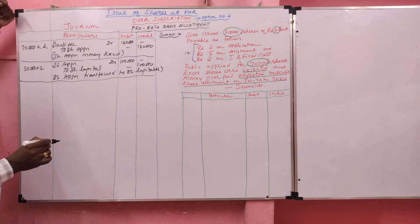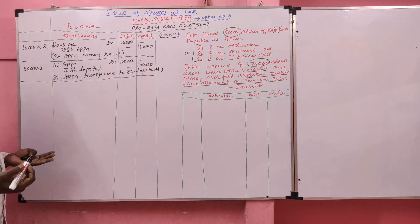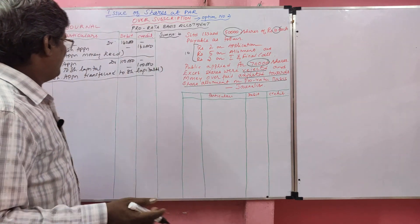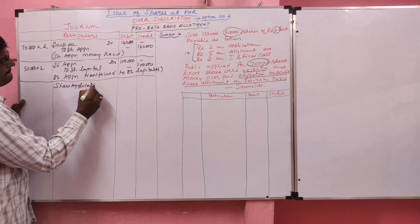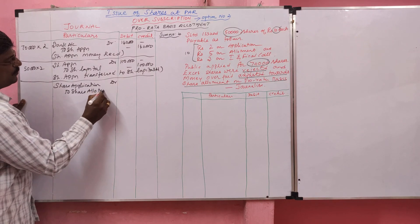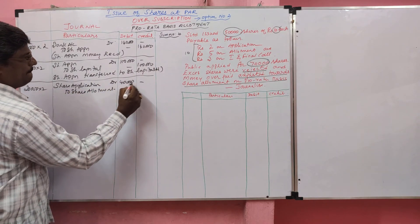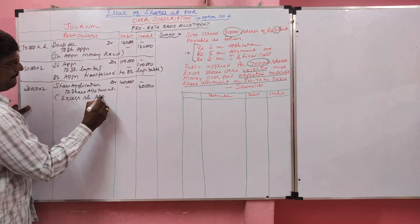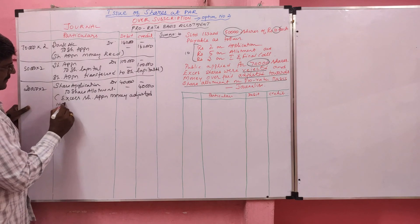So we received 70,000 share application money; we can transfer 50,000 share application money to the capital. Excess shares: 20,000. This 20,000 shares to be adjusted in the share allotment. For that, the entry is Share Application Account Dr to Share Allotment — 20,000 × 2 = Rs. 40,000. This is a new entry that will come only for pro-rata basis allotment. Narration: Excess share application money adjusted in share allotment.